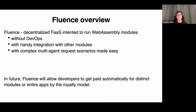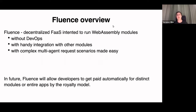Fluence is a decentralized function-as-a-service intended to run WebAssembly modules with several important features. First, it costs zero DevOps operations — all DevOps is done by the Fluence node and network. It also provides easy integration with other modules, and a special language called Aquamarine for running complex multi-agent requests. In the future, Fluence will allow developers to get paid automatically for modules or applications via a royalty model — meaning developers get paid when their modules are used by anyone else in the Fluence network.